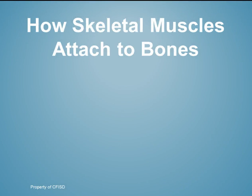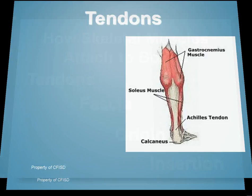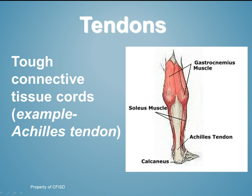How are skeletal muscles attached to bone? We have tendons, fascia, origin, and insertion. Tendons are tough connective tissue cords — for example, the Achilles tendon. Tendons connect bone to muscle. At the end of your gastrocnemius, which is your calf muscle, the Achilles tendon attaches and stretches down to your calcaneus, which is your heel bone, to allow for movement.